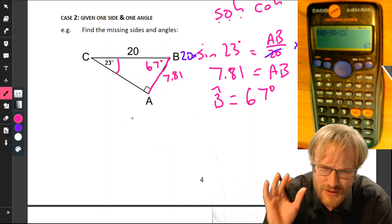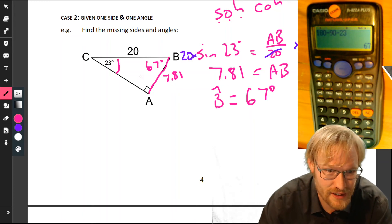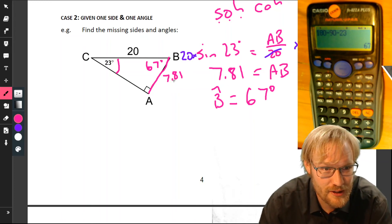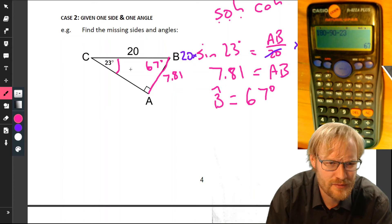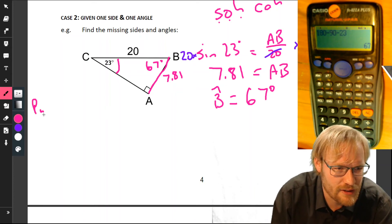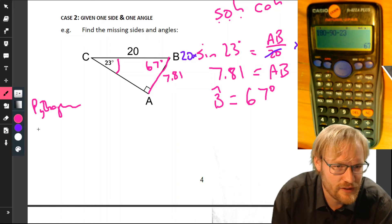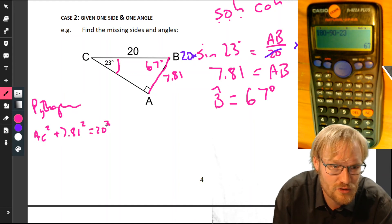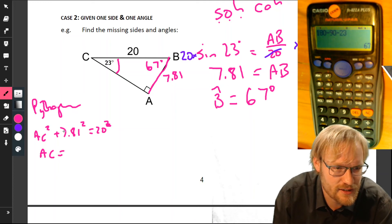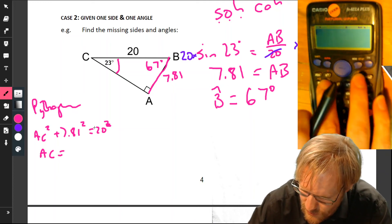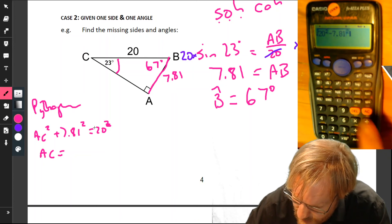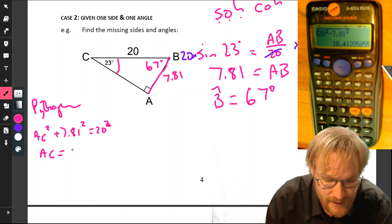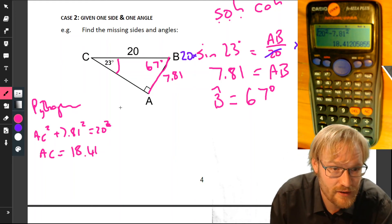Obviously just pick one. I suggest picking the one that doesn't rely on something you found out already if possible, because if you made a mistake you don't carry that mistake through. One option would be Pythagoras. For that we'd say AC squared plus 7.81 squared equals 20 squared. Therefore, AC equals square root of 20 squared minus 7.81 squared, equals 18.41.